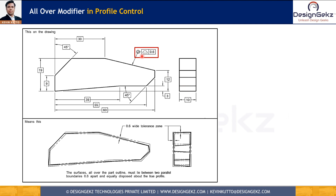The third modifying symbol is all over, shown as two concentric circles. The difference from all around is that this applies to the entire 3D surfaces and all outlines of the part. All over means surfaces all over the part outline must lie between two parallel boundaries separated by the profile tolerance value and equally disposed about the true profile. For example, with a tolerance zone of 0.6, all 3D surfaces on the part can vary with respect to the datum within plus or minus 0.3.